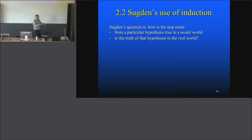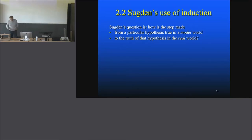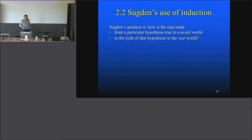So we have in the model world, say on the checkerboard example, we have that weak racial preferences produce segregation — so it's true there, and it's robust, so we can reproduce it and vary some dimensions and other parameters. And then the question is: how is the step made from that particular hypothesis true in the model world to the truth of that hypothesis in the real world?